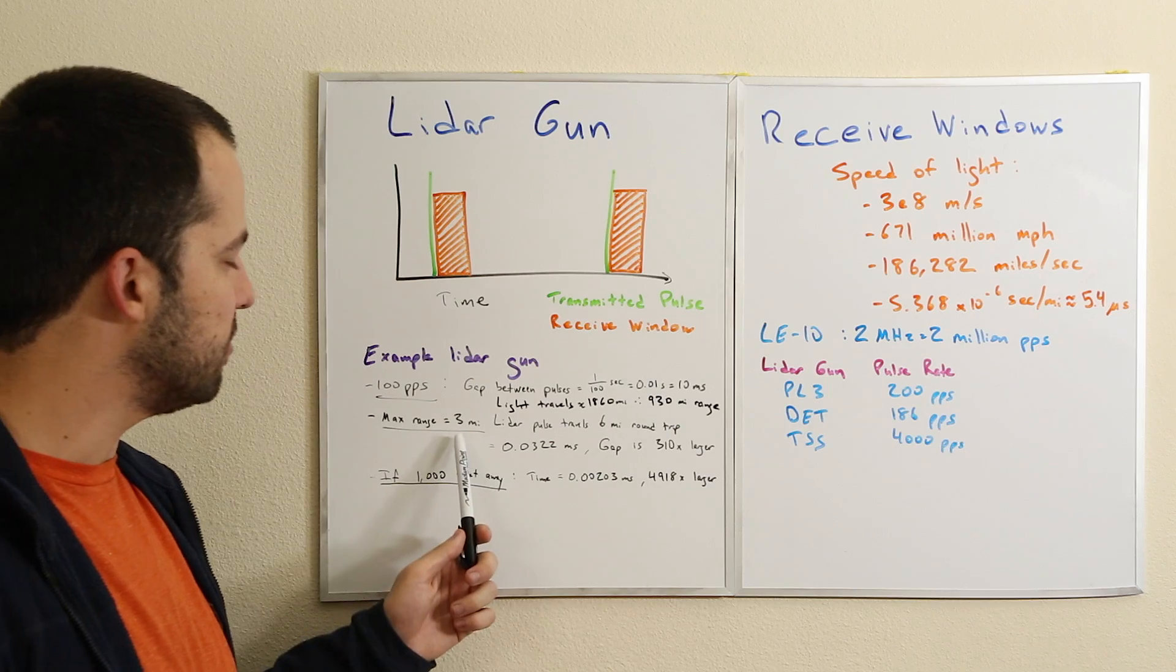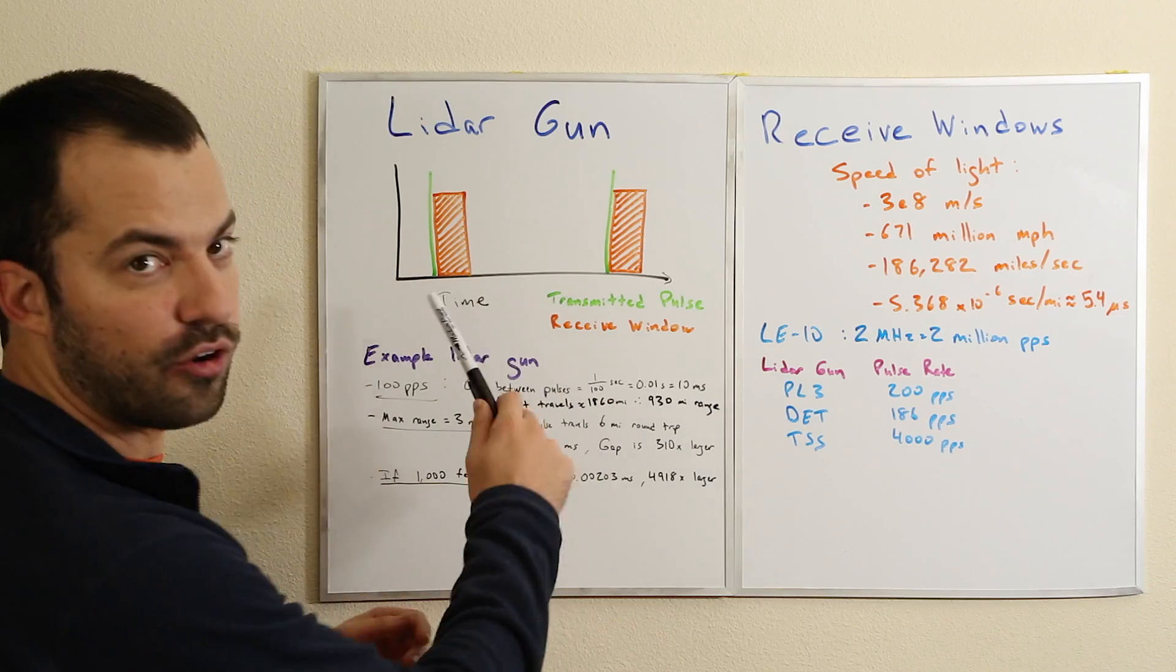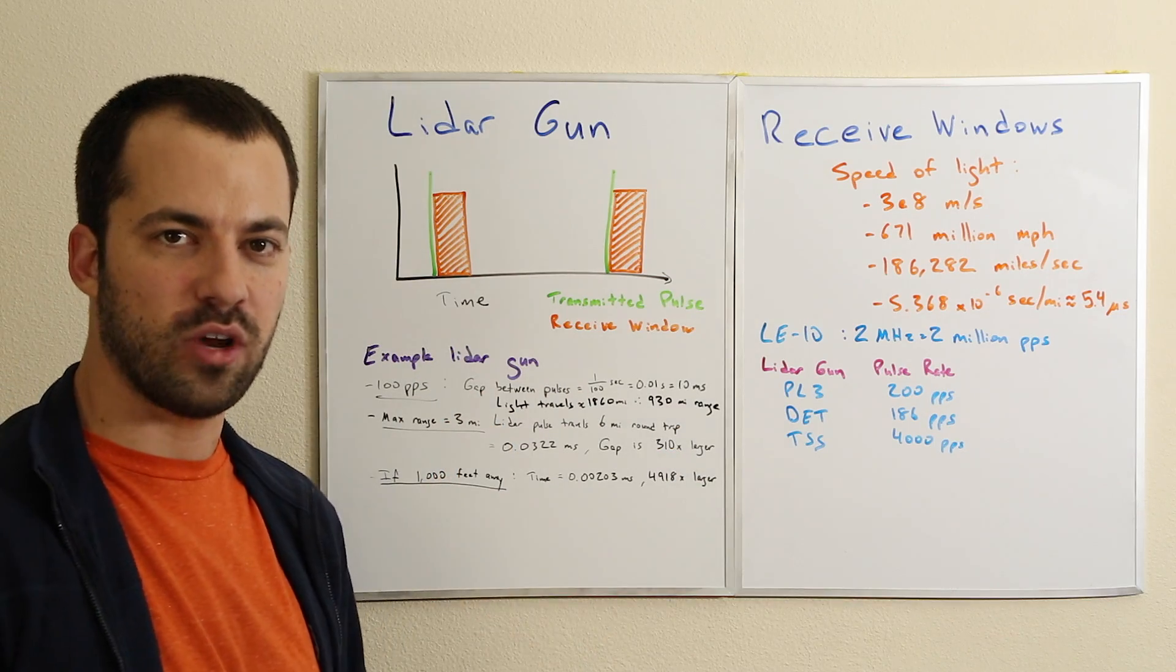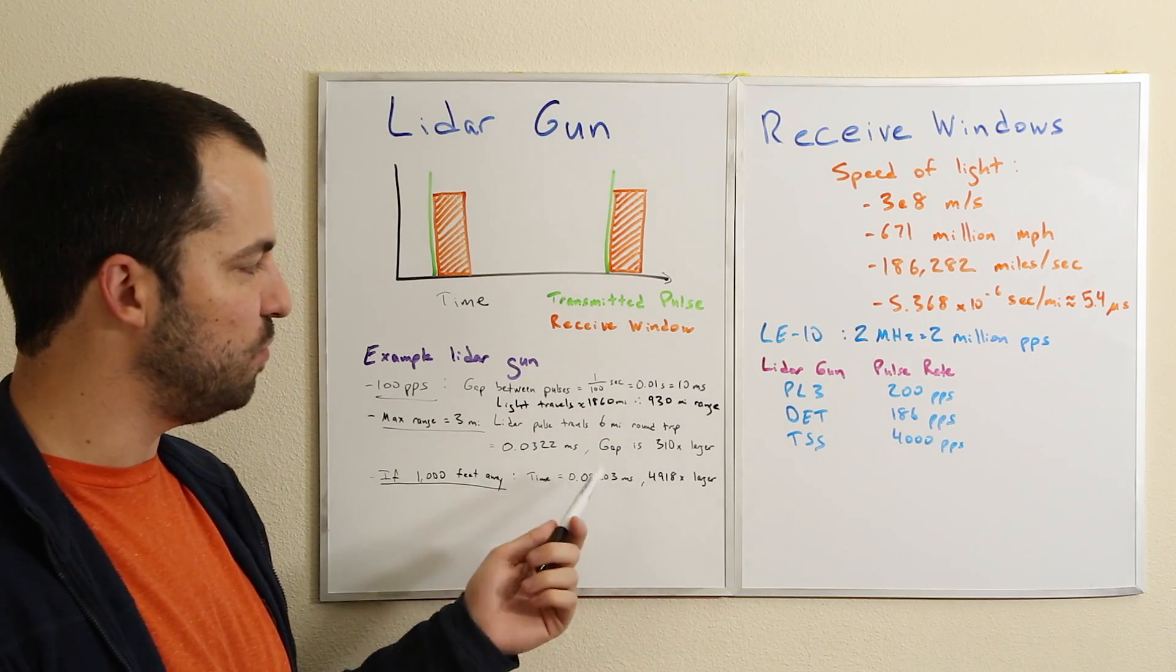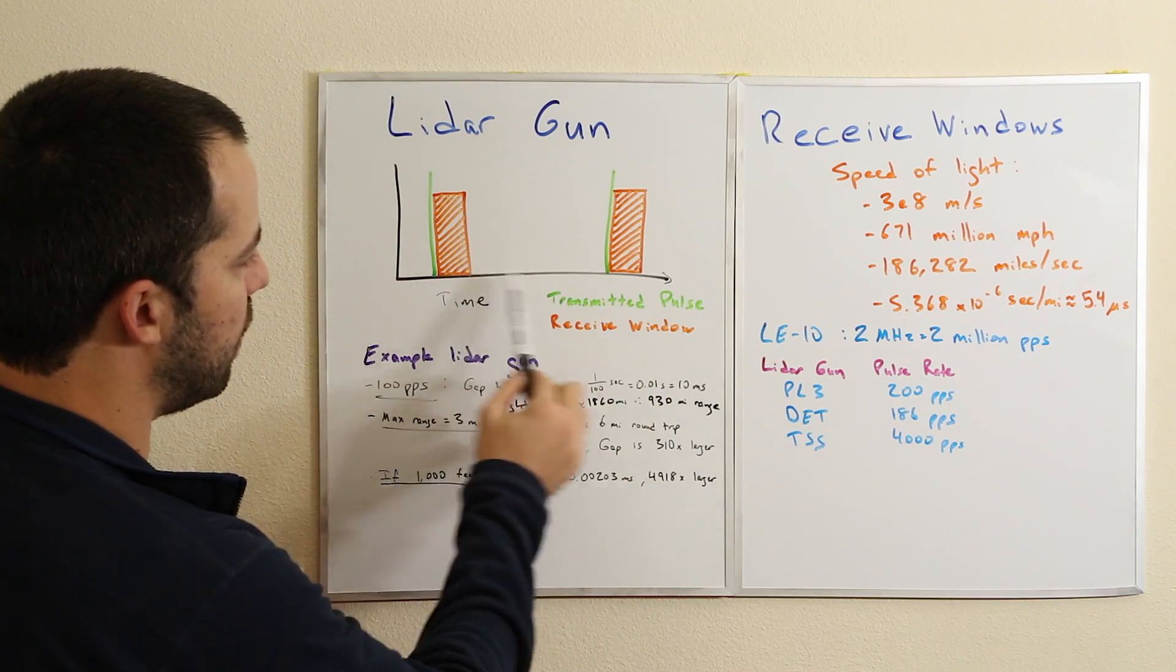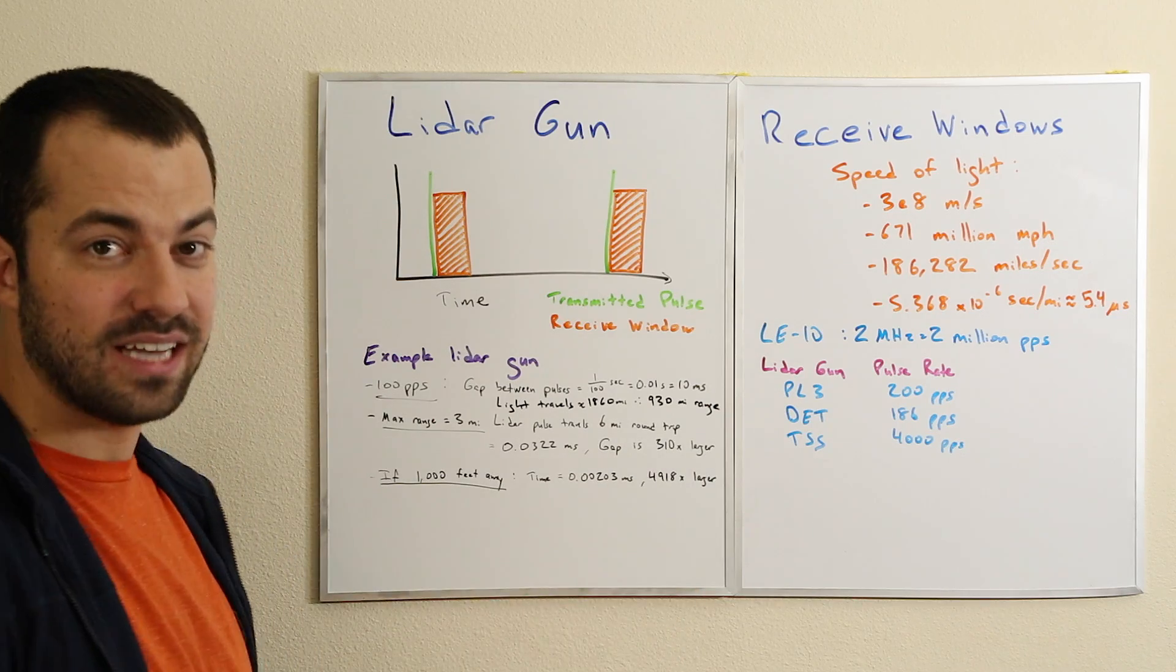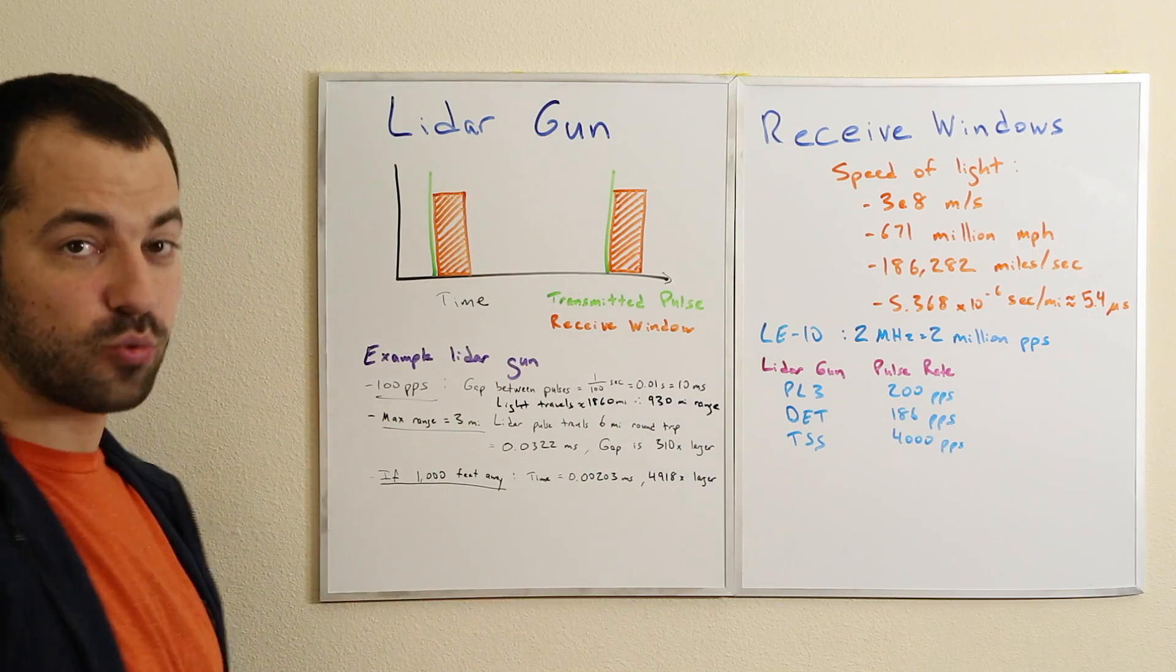If we say three miles is the maximum range, not 930 miles, the lidar pulse has to travel six miles round trip to give us a three mile maximum range. Light traveling six miles takes 0.0322 milliseconds. This entire gap between pulses is 310 times larger than the time when it's actually open to receiving a pulse at any distance closer than three miles.